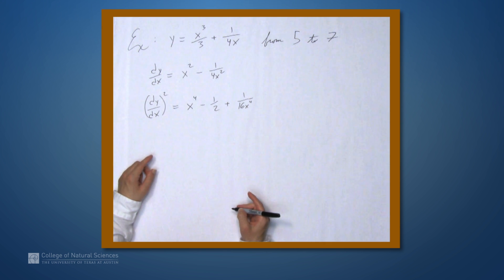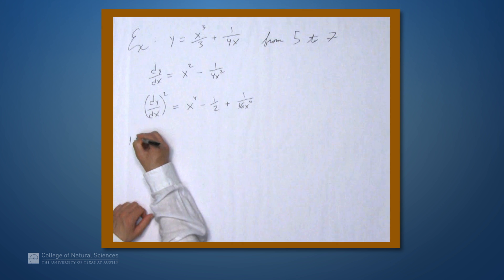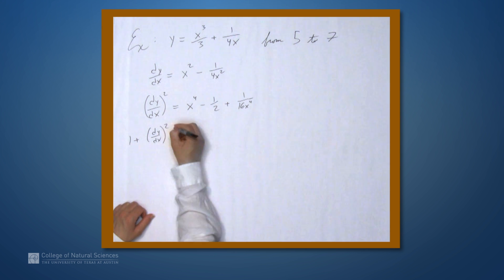We're slowly building up the integrand. Now we want to add 1 to this. So 1 plus dy dx squared equals...